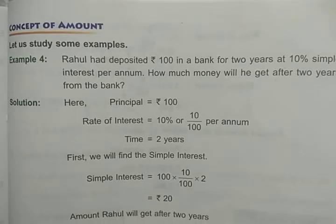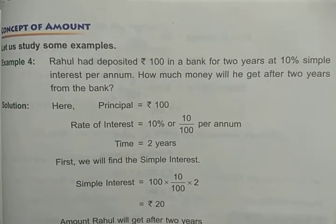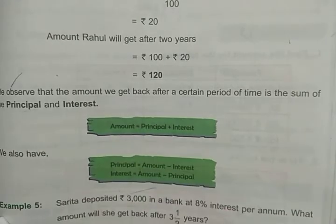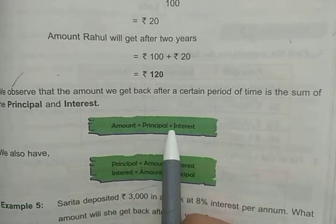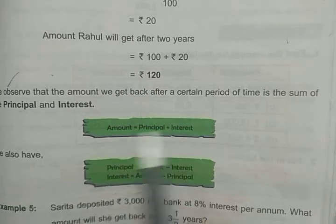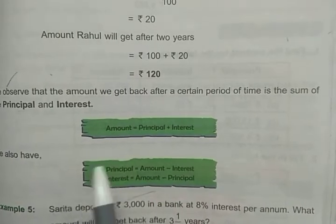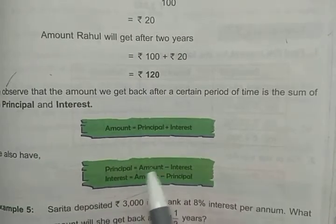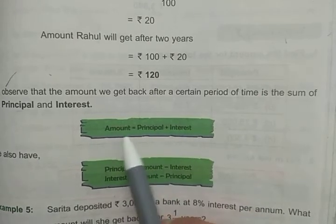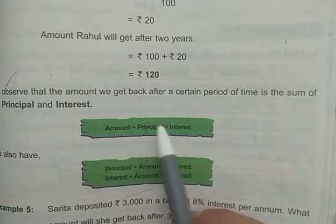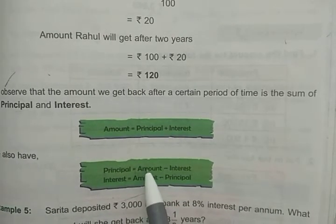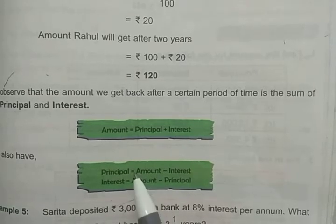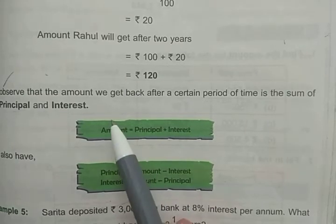The total money we get back — that is principal plus interest — is called the Amount. So the formula is: Amount = Principal + Interest. If we want to find the principal when amount and interest are given, we subtract: Principal = Amount − Interest. Similarly, Interest = Amount − Principal.